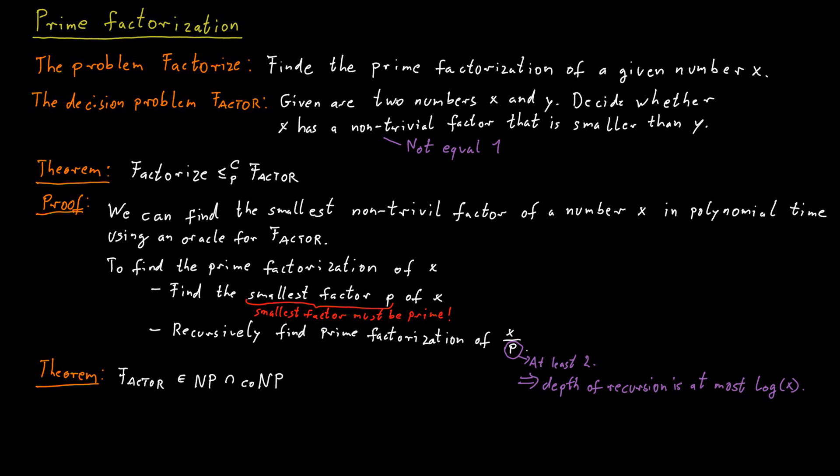To see this, we just observed that there are clearly succinct certificates for the factor problem. A succinct certificate that would certify that a number x has a non-trivial factor smaller than y would just be to give such a non-trivial factor. So we could provide a number z that is smaller than y, but larger than 1. And a verifier could easily check that this number z indeed has the claimed properties.